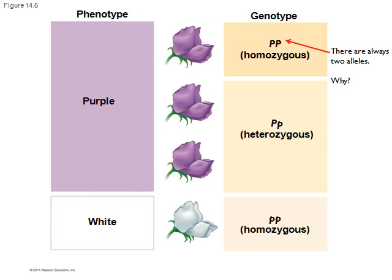Coding for that phenotype is the genotype. In the pea plant example, there are three genotypes. There's big P, big P, which is homozygous dominant. Homozygous means that you have two copies of the same allele, and it's called dominant because you have two copies of the dominant allele.